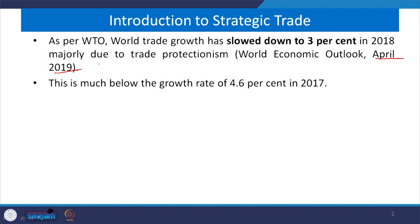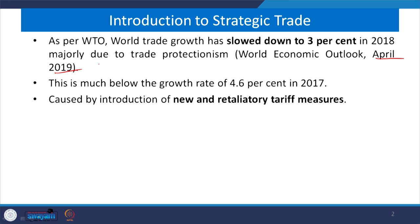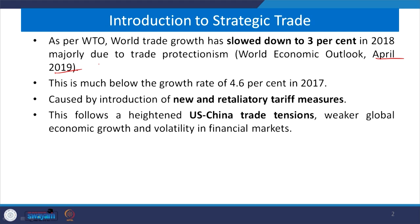As part of the introduction to Strategic Trade, based on the World Economic Outlook data published in April 2019, world trade growth actually slowed down by roughly around 3 percent in 2018 due to major trade protectionism. This is much below the growth rate of 4.6 percent in 2017, which was caused largely by new and retaliatory tariff measures.